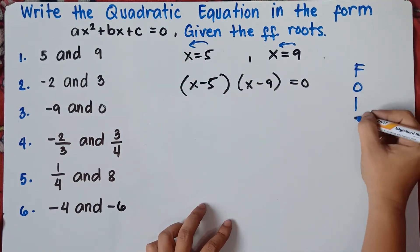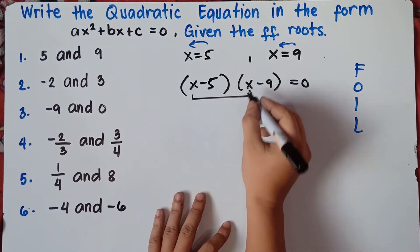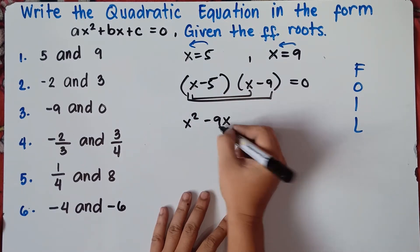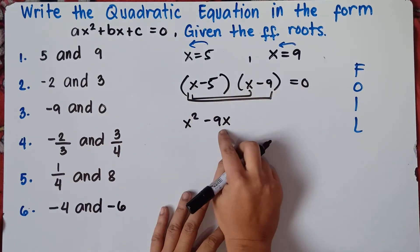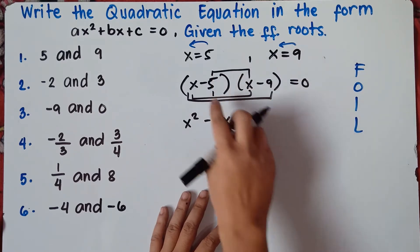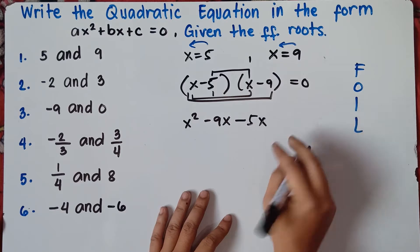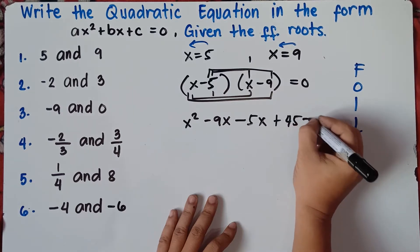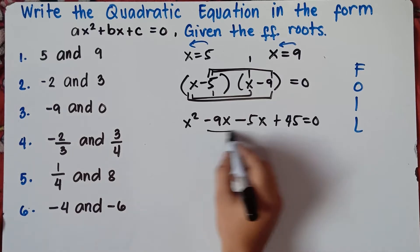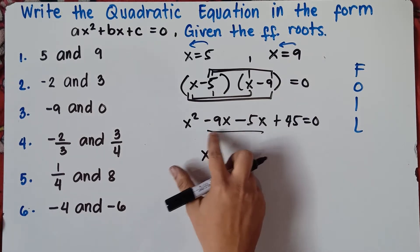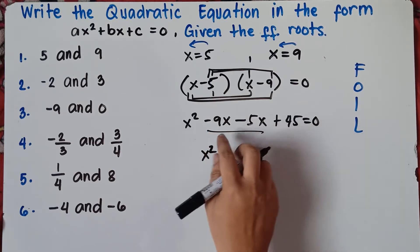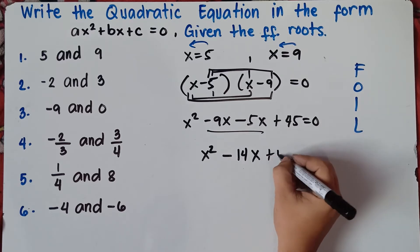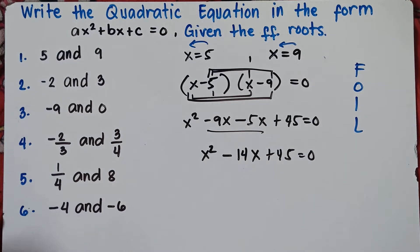FOIL: First, outer, inner, last. First: x times x equals x squared. Outer: x times negative 9 equals negative 9x — positive times negative is negative. Inner: negative 5 times x equals negative 5x. Last: negative 5 times negative 9 — negative times negative is positive 45. Equals 0. Then combine like terms: copy x squared. Both are negative, so copy the negative sign and add the numbers: negative 9 minus 5 equals negative 14x, then copy plus 45 equals 0. That's the answer for number 1.